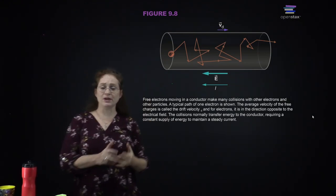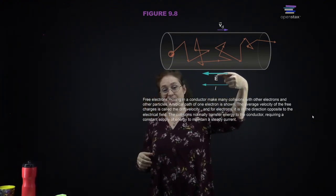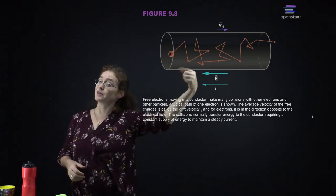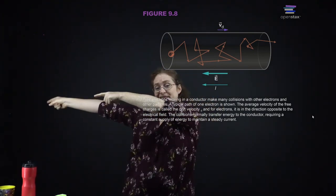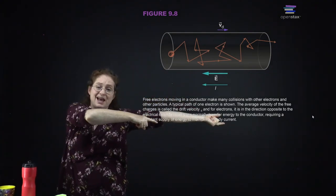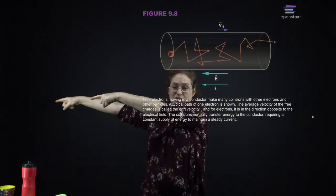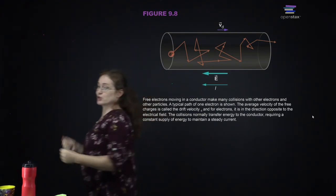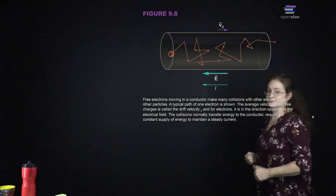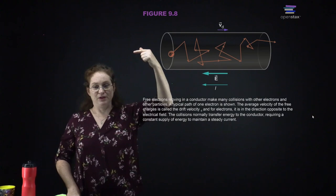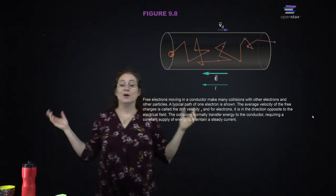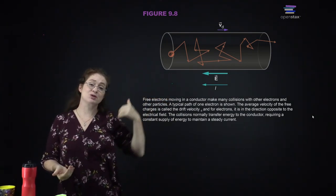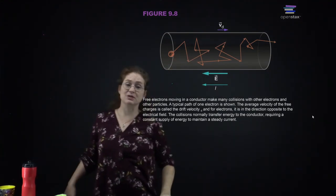The electric field points in the direction a positively charged particle would want to go. In this wire, the electric field points in one direction, so a positively charged particle moves that way. The electron is negatively charged, so it travels in the opposite direction. The sign of the current is in the direction of positive charge movement, because mathematically a positive charge moving one way is equivalent to a negative charge moving the opposite direction. So electric field and current are in the same direction, while the drift velocity of electrons is opposite to the electric field.